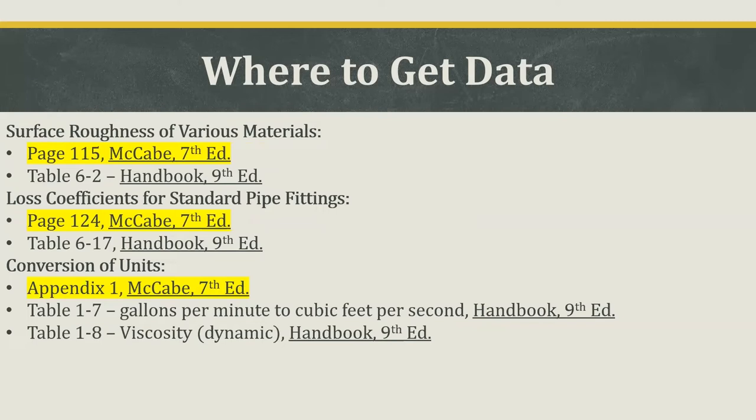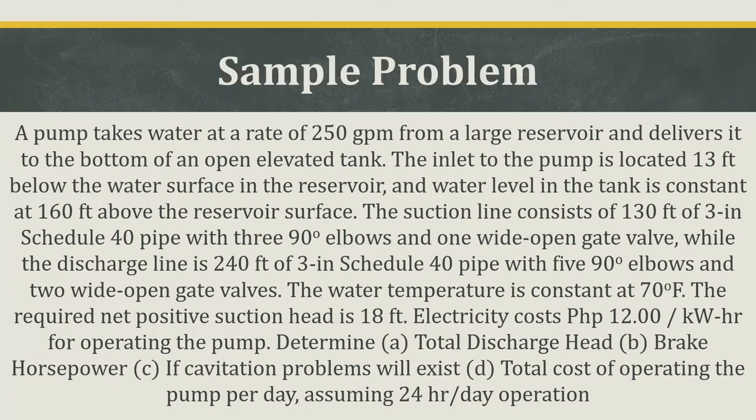Let's now go to the actual problem. A pump takes water at a rate of 250 gallons per minute from a large reservoir and delivers it to the bottom of an open elevated tank. The inlet to the pump is located 13 feet below the water surface in the reservoir, and the water level in the tank is constant at 160 feet above the reservoir surface. The suction line consists of 130 feet of 3-inch schedule 40 pipe with three 90-degree elbows and one wide open gate valve, while the discharge line is 240 feet of 3-inch schedule 40 pipe with five 90-degree elbows and two wide open gate valves.